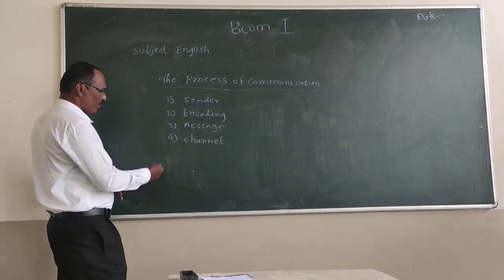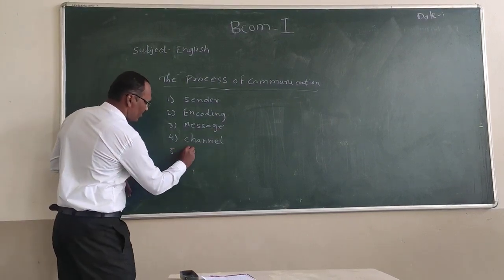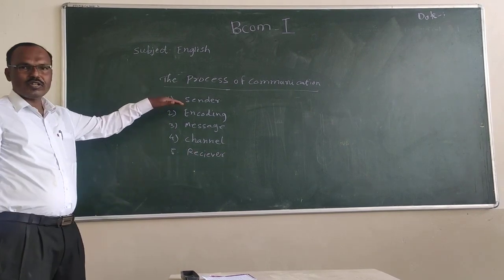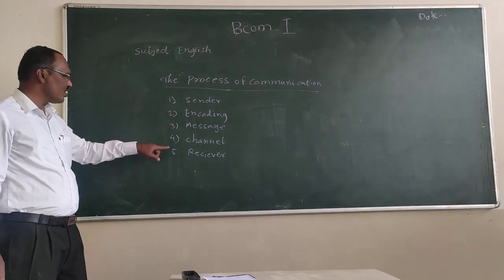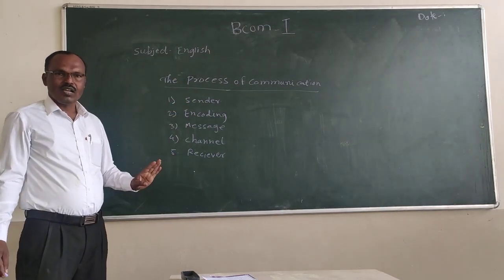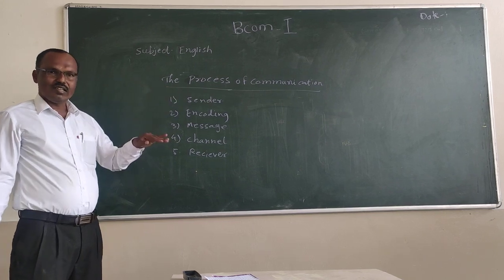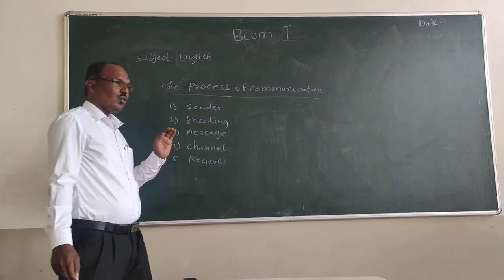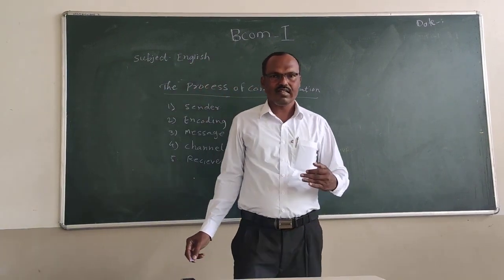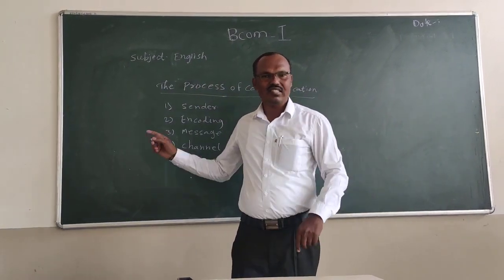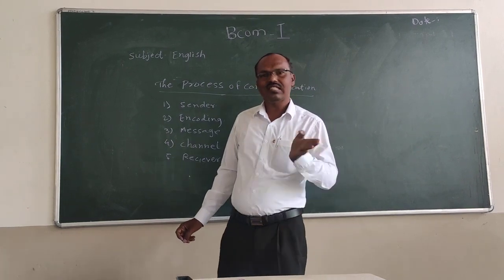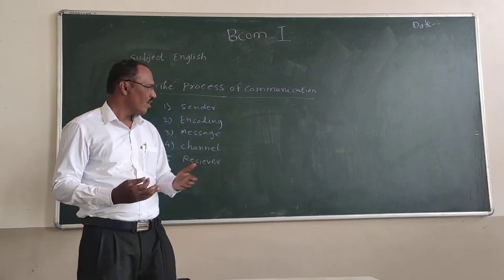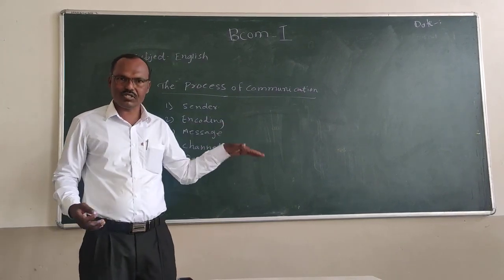The fifth aspect is the receiver. As the sender is important, in the same way the receiver is important. As the sender sends a message, the receiver receives it. The whole process of communication takes place for this receiver, because the sender wants to share some kind of information or message with the receiver — that is why this process takes place.